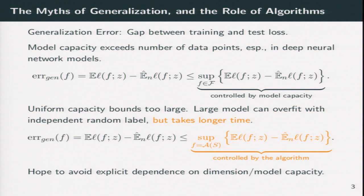One of the motivating examples is in deep neural networks. Everyone in this room knows that generalization error can be controlled with high probability by some uniform model capacity. But this is actually really large in deep neural networks and a lot of large non-convex models. People show that deep neural networks can fit independent random labels.